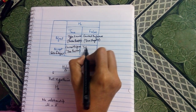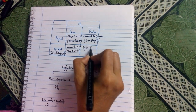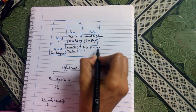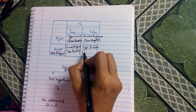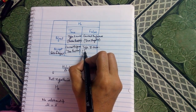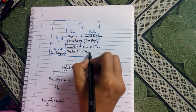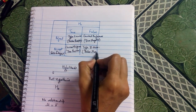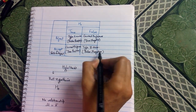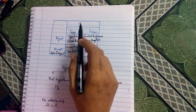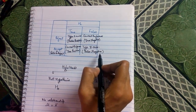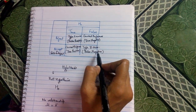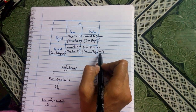If null hypothesis is false and we are accepting it, we are committing an error and it is known as Type 2 error. In other words, we could also say false negative. If null hypothesis is false, it is negative, and we are accepting it — that means false negative.